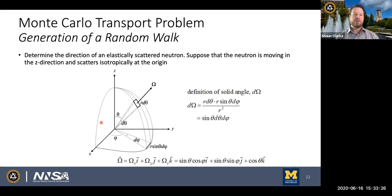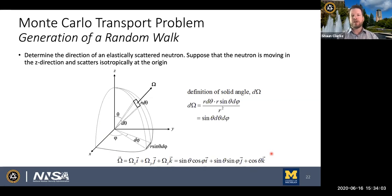Since we assumed all scattering is isotropic, if the sampled reaction type is a scatter event, we define the new direction of travel using the same isotropic angular sampling shown earlier. If the particle gets absorbed, that's the end of the history and we tally one in our absorption count. Otherwise, we pick a new direction, then a new flight distance, continuing until the particle is either absorbed or escapes through one of the two faces of the 1D slab.